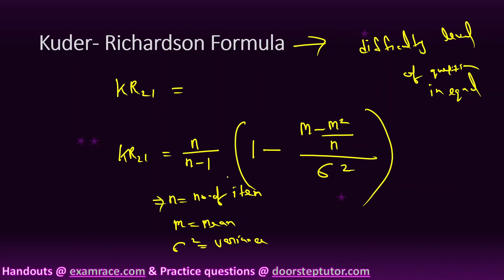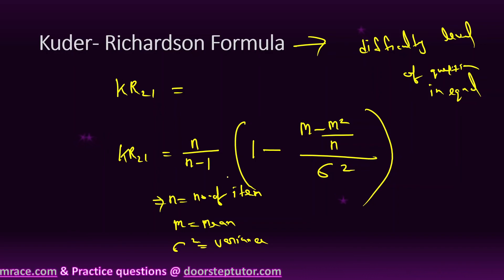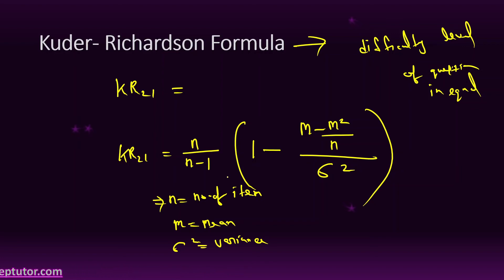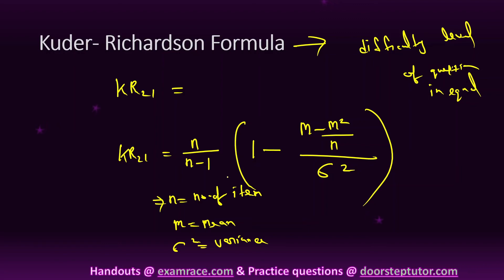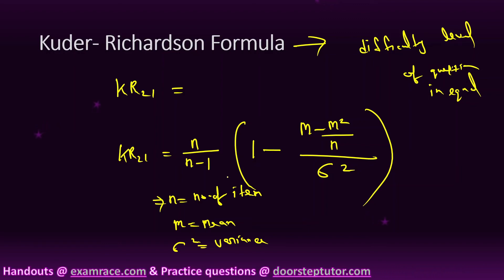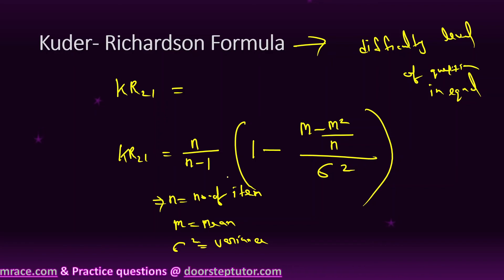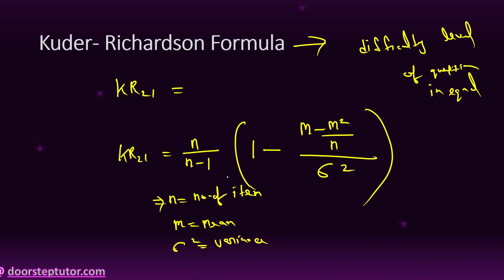KR-21 is used when the difficulty level is equal. These are about internal consistency. Under internal consistency, we read about the split-half method, calculated by odd-even method or difficulty level method, and split-half is expressed using the Spearman-Brown formula, Cronbach formula, and Kuder-Richardson formula.